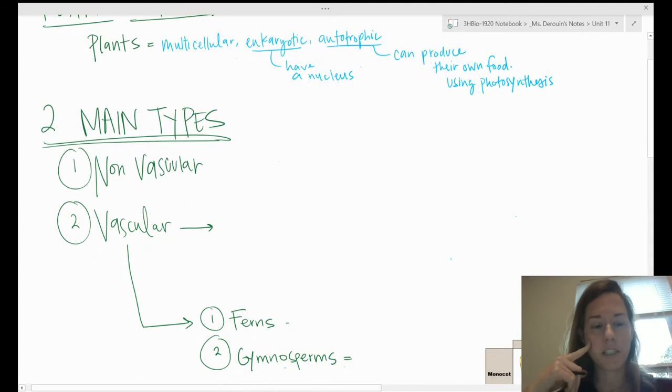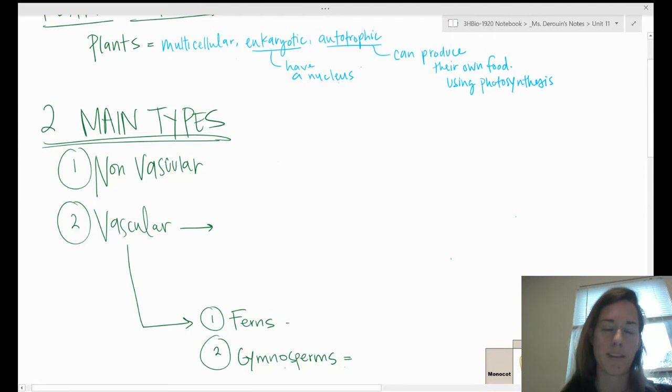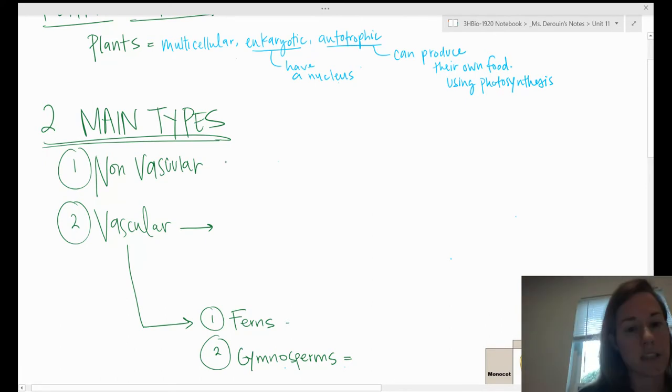There are two main types of plants that we're going to talk about: non-vascular and vascular. The plants that you usually think about if you're just picturing a plant in your mind are vascular plants.